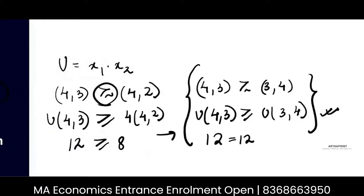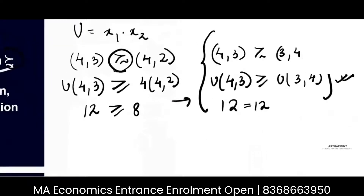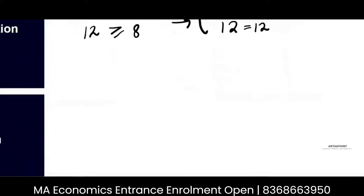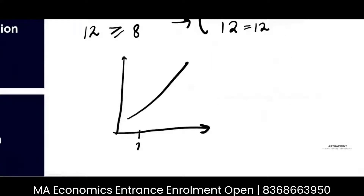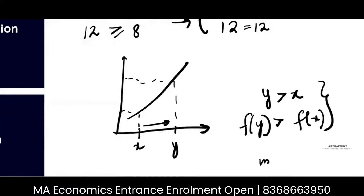Supposedly I tell you that I have a function which is an increasing function. An increasing function is anything such that if I take x and y, and y is greater than x, then if I put the value of y in the function, it should be greater than the value of x. Then this function is called an increasing function.